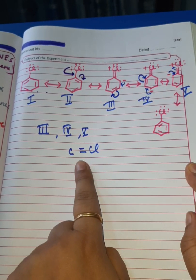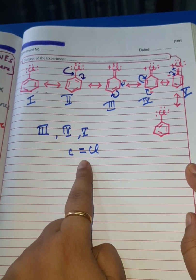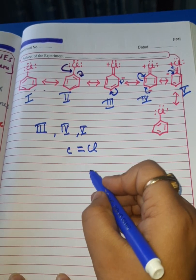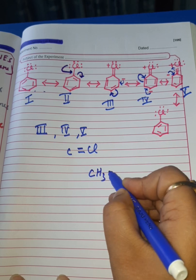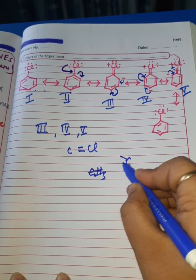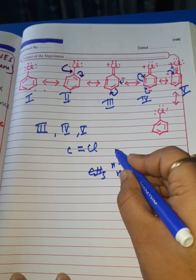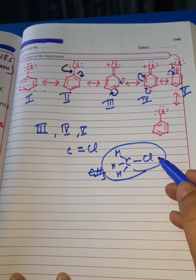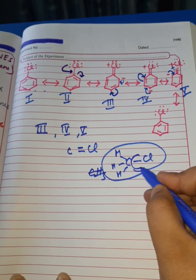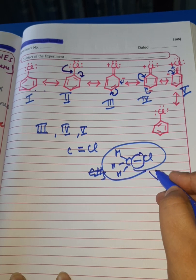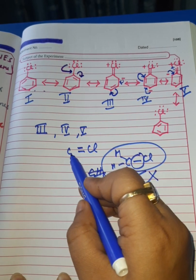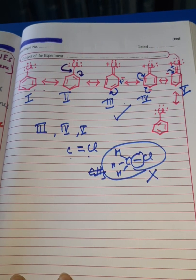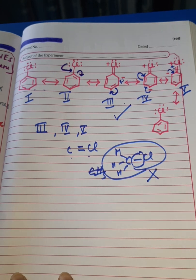Since the C-Cl bond becomes stable due to resonance, it cannot be cleaved as easily as in the case of haloalkanes. For example, in CH₃Cl, there is no such scope for development of double bond character. So the strength of the C-Cl bond in haloalkanes is not as strong as the C-Cl bond in haloarenes. I hope the first factor is clear.